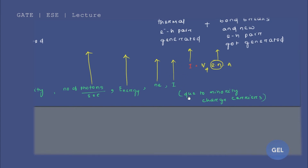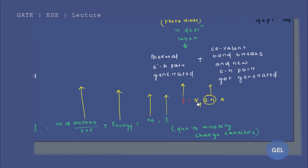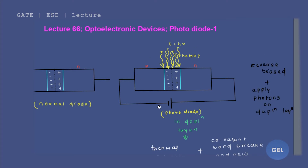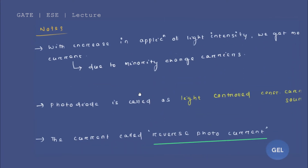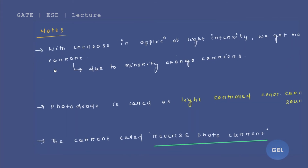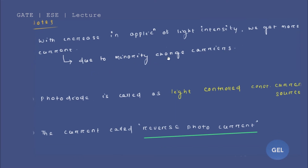This current is due to minority charge carriers. All of the carriers generated here are minority charge carriers. With an increase in the application of light intensity, we get more current — more charge density increase per unit volume. All of this current improvement is due to minority charge carriers.